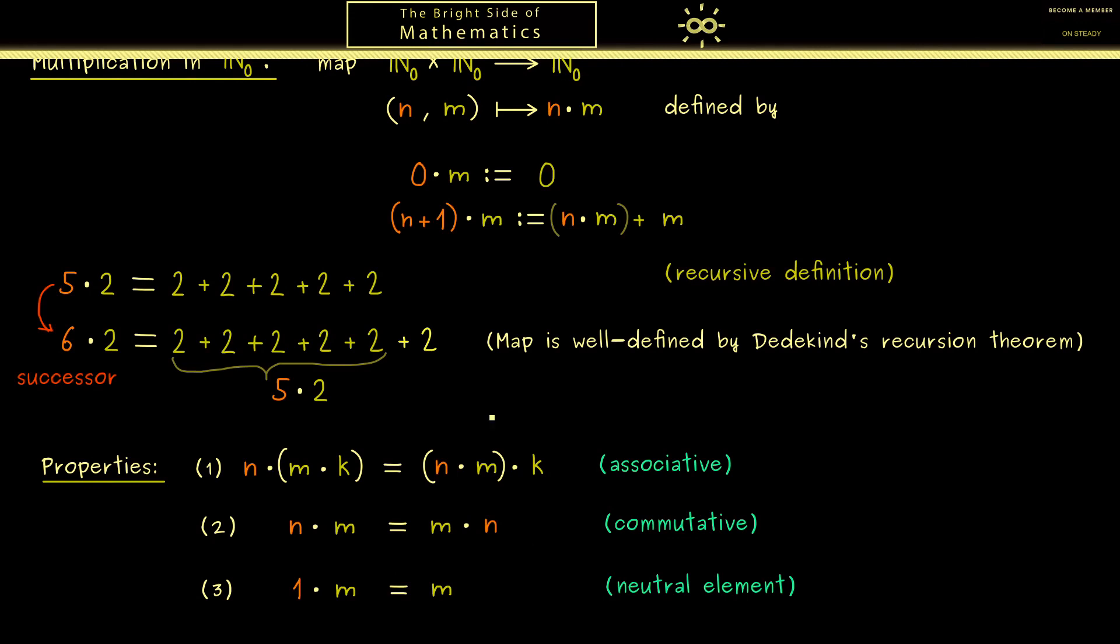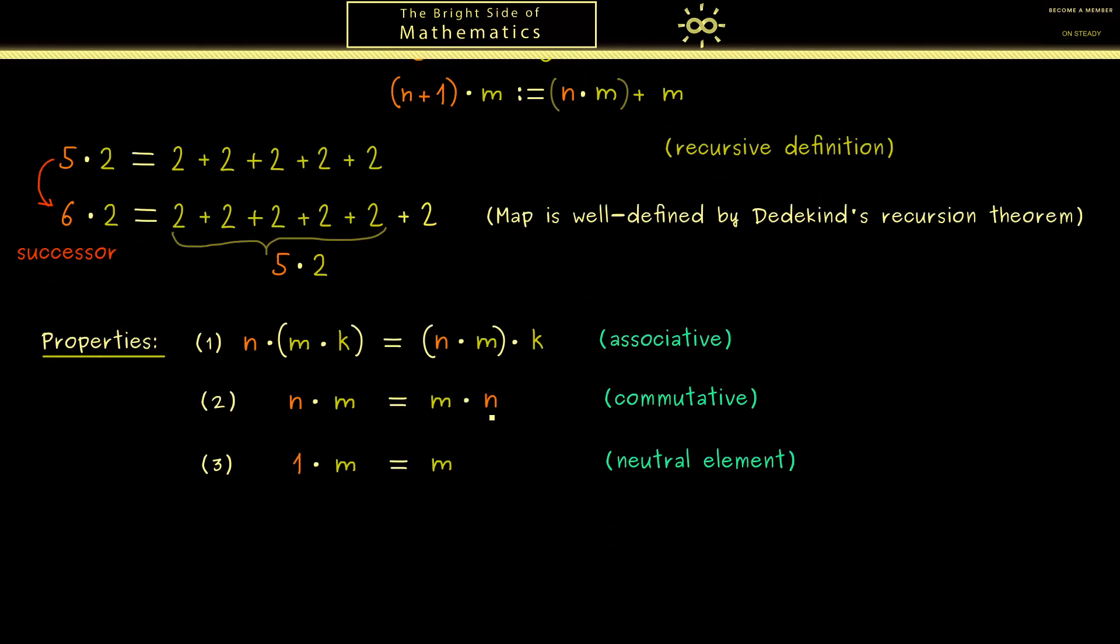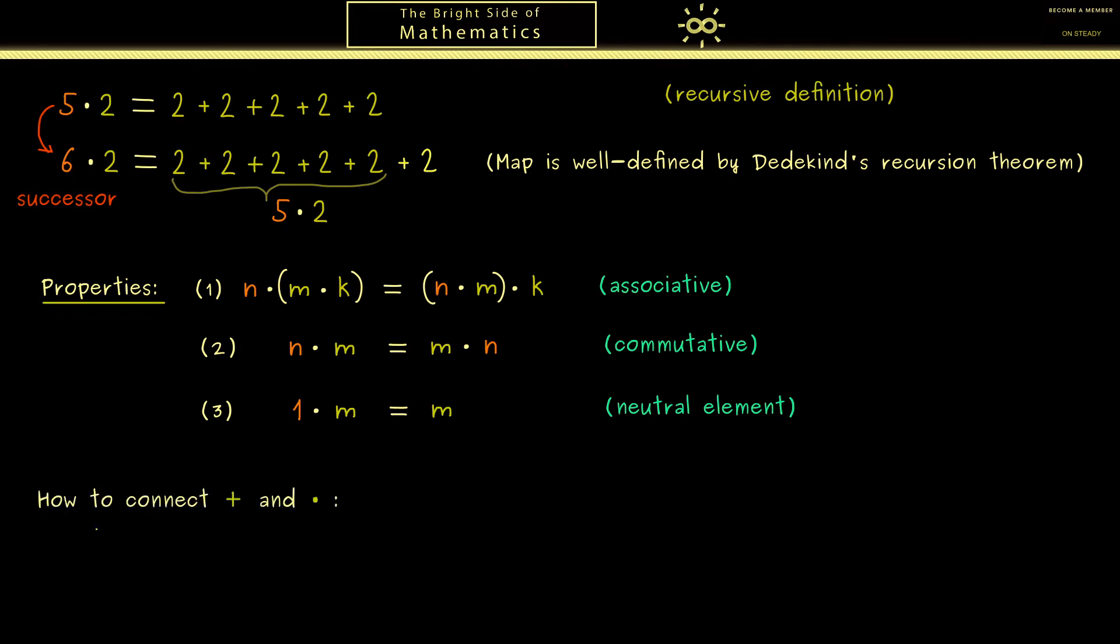For this reason a fitting question would be: how do we connect both operations? Of course this is something you learn in school, how to deal with when you have addition and multiplication in one calculation. Or in other words, how can we rewrite an expression like this. And of course you know it, you can expand it like this. And we call it the distributive law. For this maybe it's a good idea to write down the proof by induction.